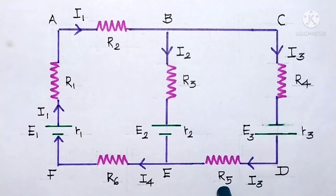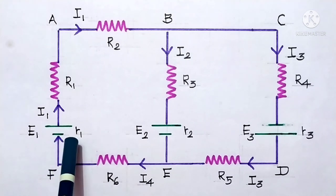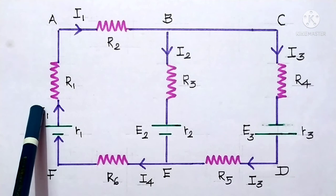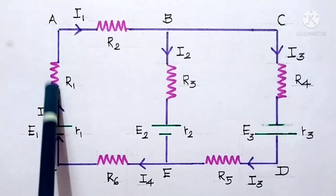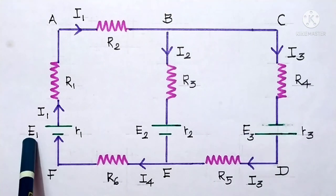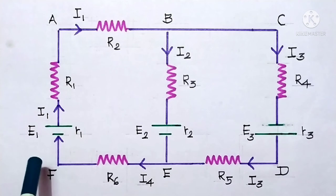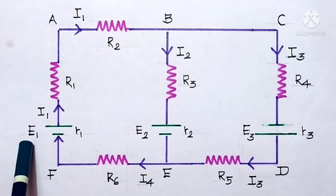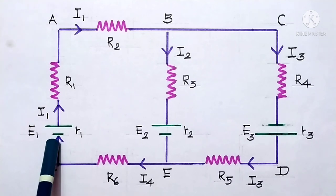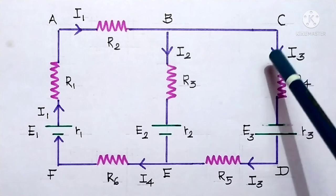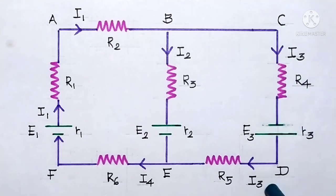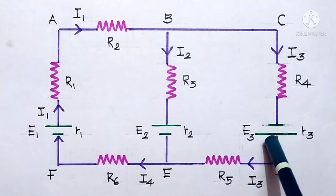Then I3 times R5, and I4 times R6, and here comes another cell with internal resistance R1. So I4 times R1. We have already found the products of currents and resistances. The cells in this loop are E3 and E1. In the case of E1, the current moves from the negative terminal to the positive terminal, so the EMF is taken as positive. Similarly, for E3, the current also moves from negative to positive terminal, so E3 is also taken as positive.